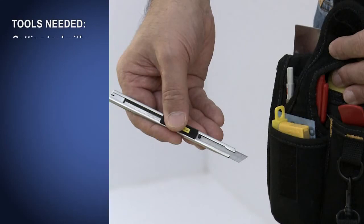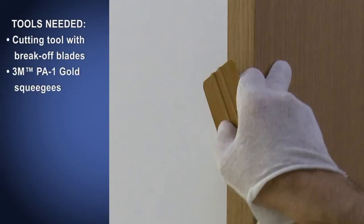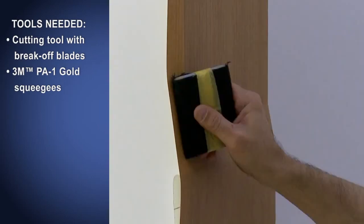You will need a cutting tool with break-off blades, two 3M brand applicator PA-1 gold squeegees. One squeegee should have the edge protected with the soft loop side of 3M's hook and loop tape or a 3M brand low friction sleeve PA-1.